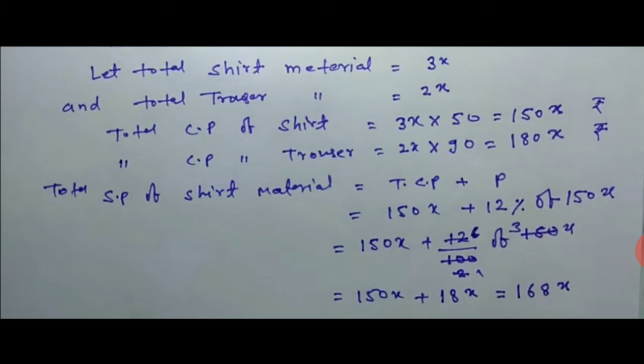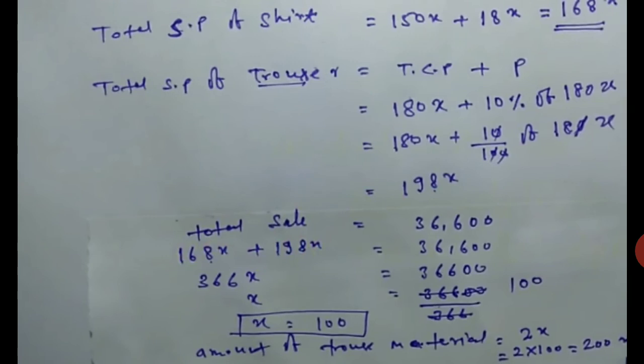This equals 168x. Now total selling price of trouser: total cost price plus profit. Cost price of trouser is 180x plus profit of 10% of 180x. When we calculate, percent changes to 10 upon 100 of 180x. When we cancel, we get 180x plus 18x equals 198x.